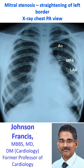Mitral stenosis – straightening of the left border on chest X-ray PA view. The uppermost portion on the left cardiac border is the aortic knuckle. The next slight bulging is the main pulmonary artery, and the left atrial appendage is seen below that.